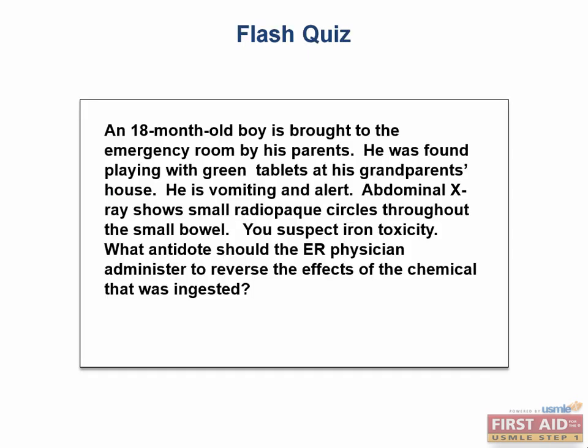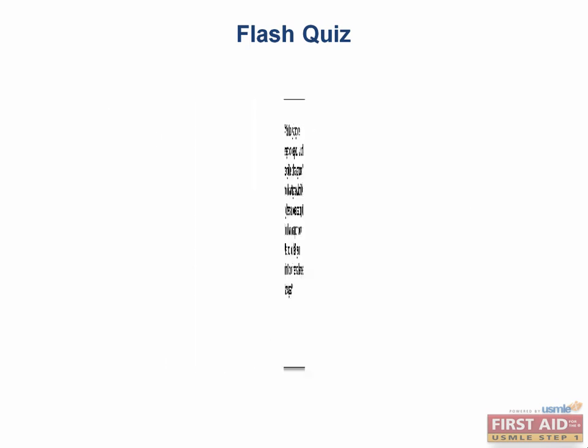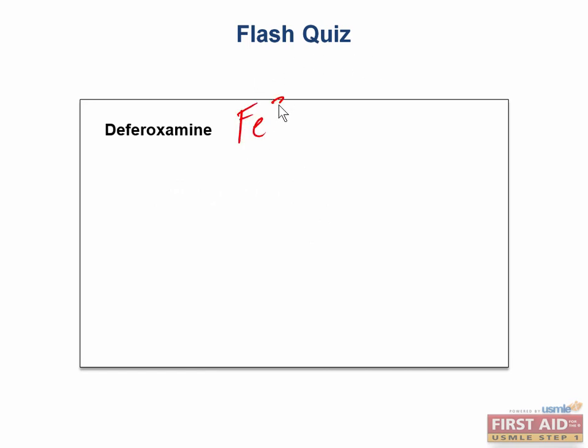Here's another flash quiz on drug toxicities. An 18-month-old boy is brought into the ER by his parents after being found playing with green tablets at his grandparents' house. He is vomiting and alert. Abdominal x-ray shows small, radiopaque circles throughout the small bowel, and you suspect iron toxicity. What antidote should the ER physician administer? The green tablets represent iron tablets, which can appear like candy to a child. Deferoxamine will bind ferric ions to create ferroxamine — a stable, water-soluble complex readily excreted by the kidneys. Therefore, the treatment for an iron overdose is deferoxamine.